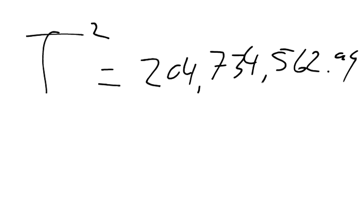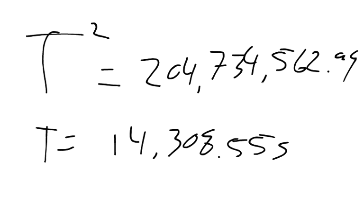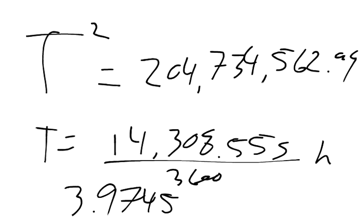So we got to square root that, and you get that the square root is equal to 14,308.55 seconds. It wants the answer in hours, so we divide that by 3,600, and it gives us the answer in hours. What I got was 3.9745 hours.